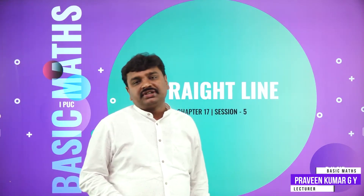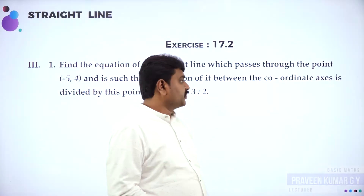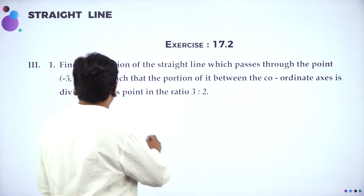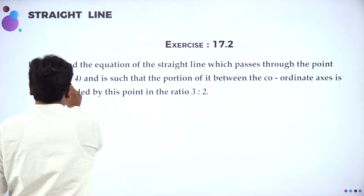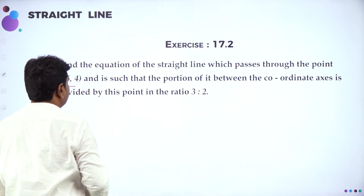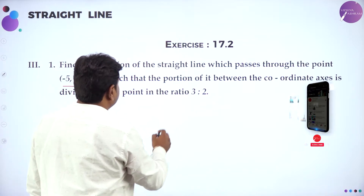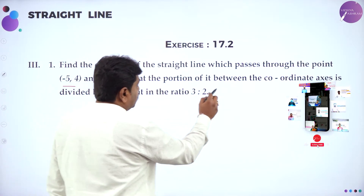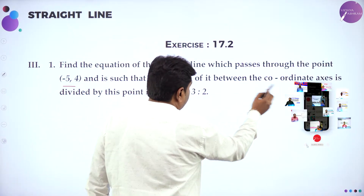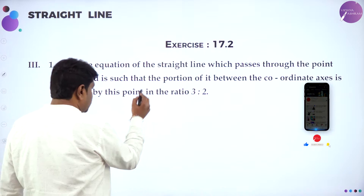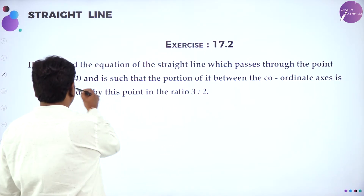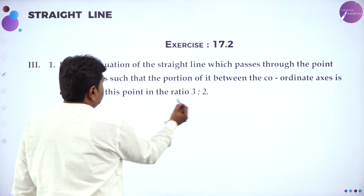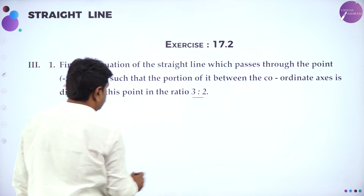Welcome to the session, dear students. Today we will go ahead with straight lines. Find the equation of a straight line which passes through the point (-5, 4) such that the portion between the coordinate axes is divided by this point — that is, the given point (-5, 4) — in the ratio 3 is to 2.